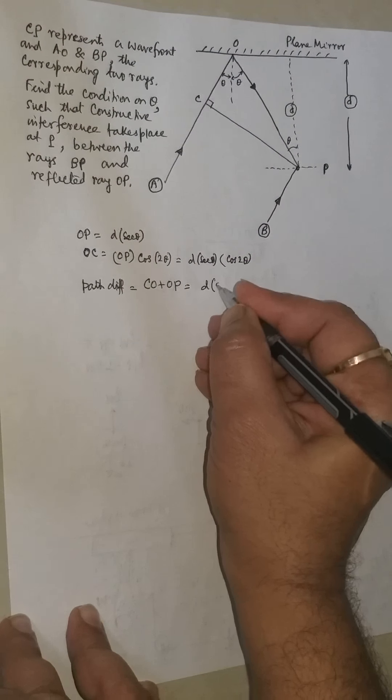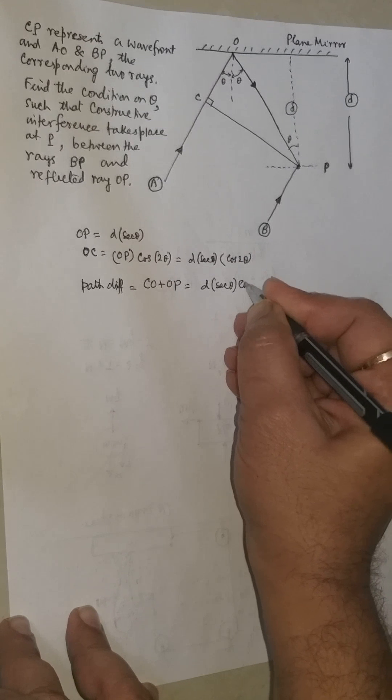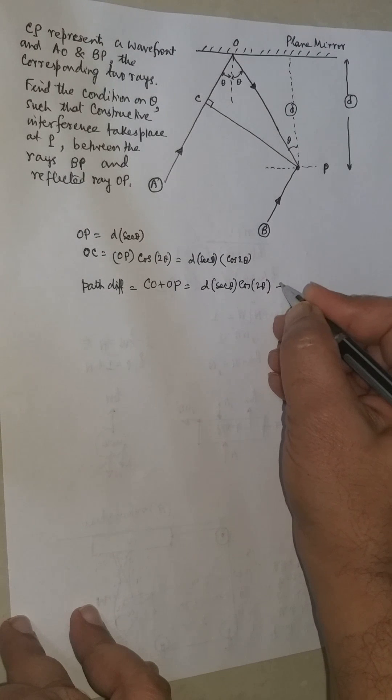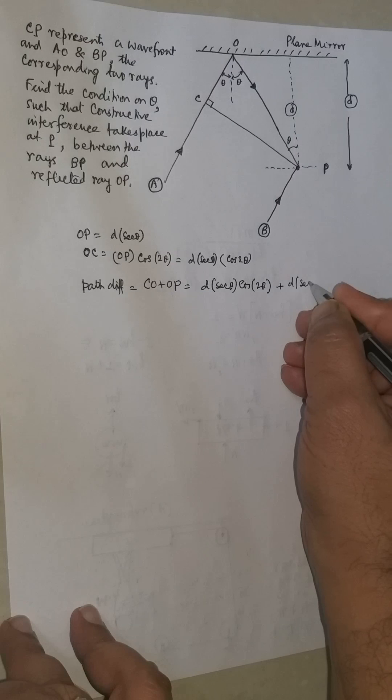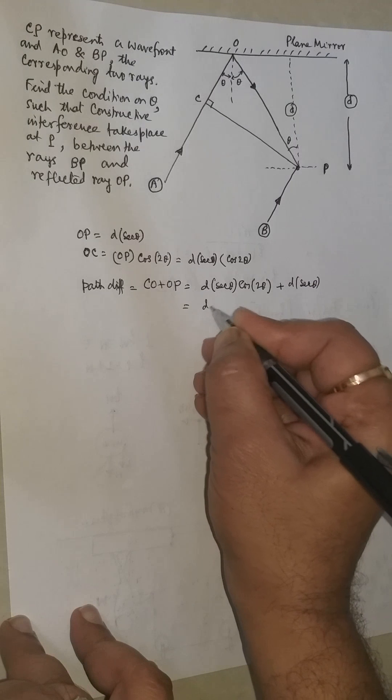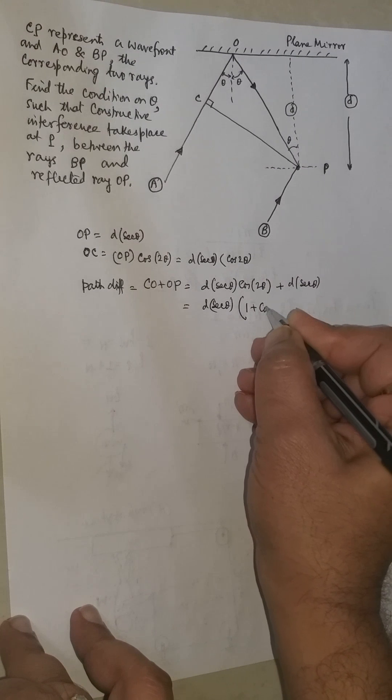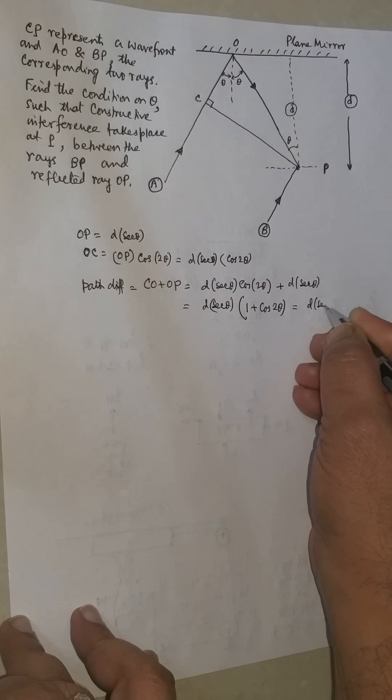Now CO is D sec theta cos 2 theta plus OP. OP is D sec theta. We can take D sec theta common for our convenience. So it will be D sec theta times (1 plus cos 2 theta).